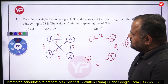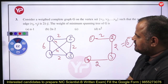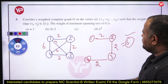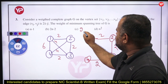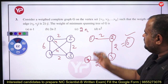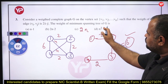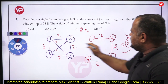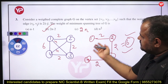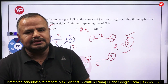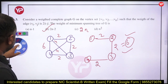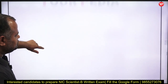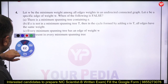Now eliminate the options: option A gives N-1 = 3, which is wrong. Option B gives 2N-2 = 6, which matches. N² = 16 is wrong. The correct option is B only. For this type of problem, just take a simple example graph and eliminate the options — it should take only 30 to 60 seconds.